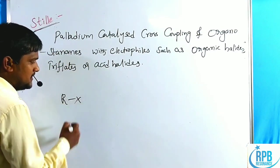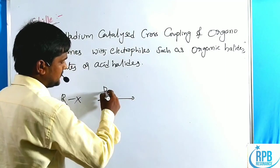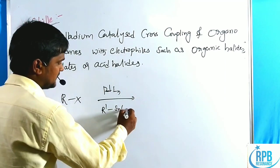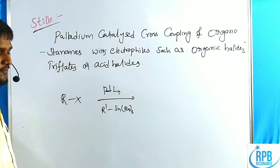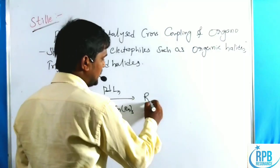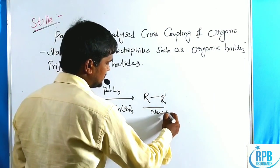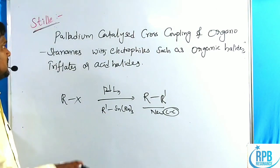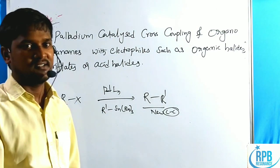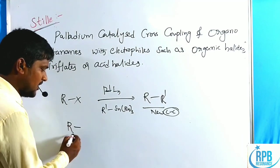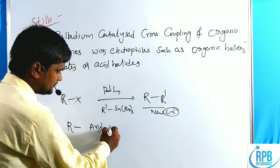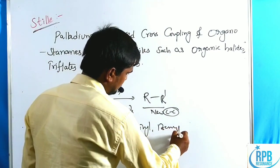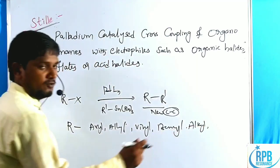This is the general representation of the Stille cross-coupling reaction. Here, R-X is treated with a palladium ligand (L_n) complex, along with R'-Sn(Bu)₃ or R'-Sn(Me)₃. The result is an R-R' new C-C bond formation product. R' can be aryl, allyl, vinyl, benzyl, or alkyl groups.